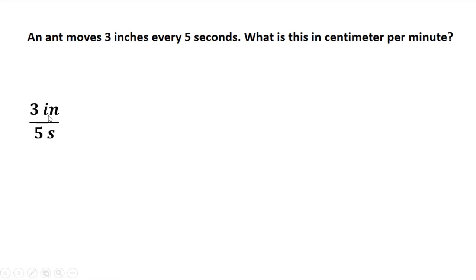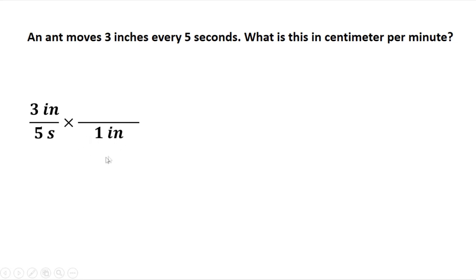We need inches converted to centimeters and seconds converted to minutes. Using the conversion table, one inch is equivalent to 2.54 centimeters. We multiply the given, and since inches is in the numerator, during conversion it should be at the denominator so that we can cancel this unit.